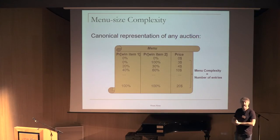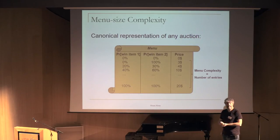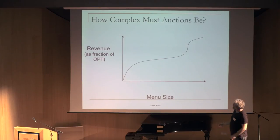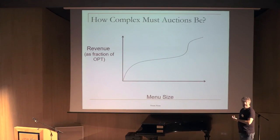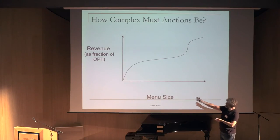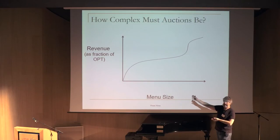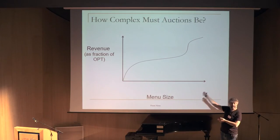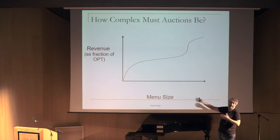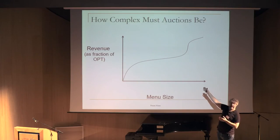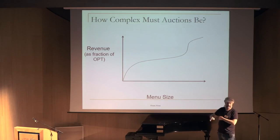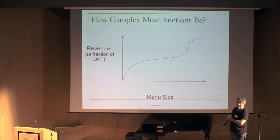We want to ask: how does revenue look as a function of menu size? As menu size grows from very small to very large, revenue as a fraction of optimal grows from 0 (size 0, can't do anything) to 1 (infinite size, optimal auction). The question is how this graph looks.